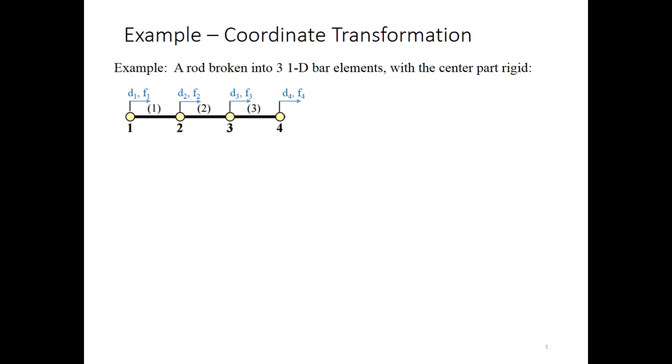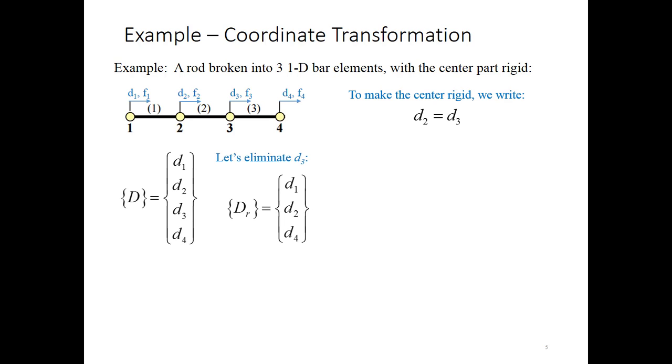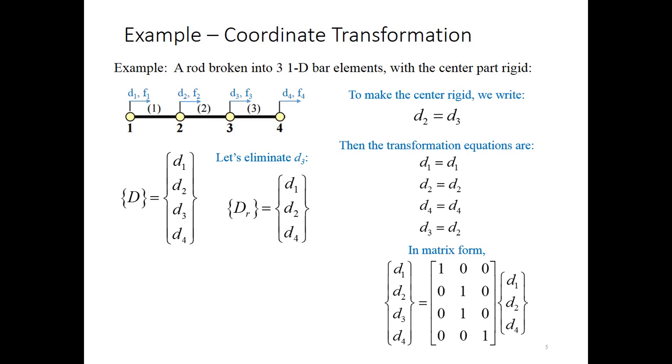Let's go through a quick example with coordinate transformation. Suppose I have this rod made up of three elements, and I want to make the center part between nodes 2 and 3 rigid. So I don't want that in my system anymore. Specifically, what I want to do is tie degree of freedom 2 to degree of freedom 3. To make the center rigid, we write D2 is equal to D3. And now what we want to do with the coordinate transformation approach is eliminate D3 and its corresponding equation. So we have our original degree of freedom vector, D1 through D4, and our reduced one is D1, D2, D4. So the transformation equations are D1 doesn't change, D2 doesn't change, D4 doesn't change, and D3 becomes D2. That's the new one. So in matrix form, this is what our transformation equation looks like, and that then defines my transformation matrix.